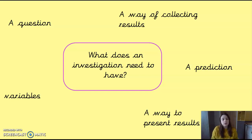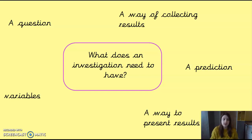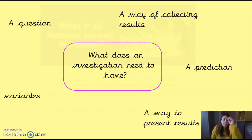You need a way to present your results — it might be a table, a graph, a pie chart — some way that you can put all your results together rather than just having random numbers everywhere, so that someone looking at your investigation can clearly see what your results show. And you also need variables: the things you're going to look at and the things you're going to change. We're going to include all of those things in our investigation today.